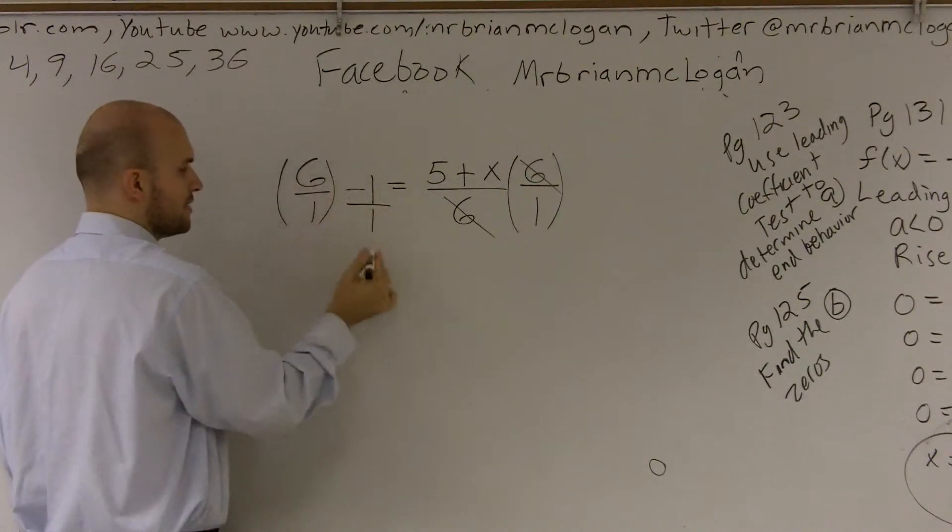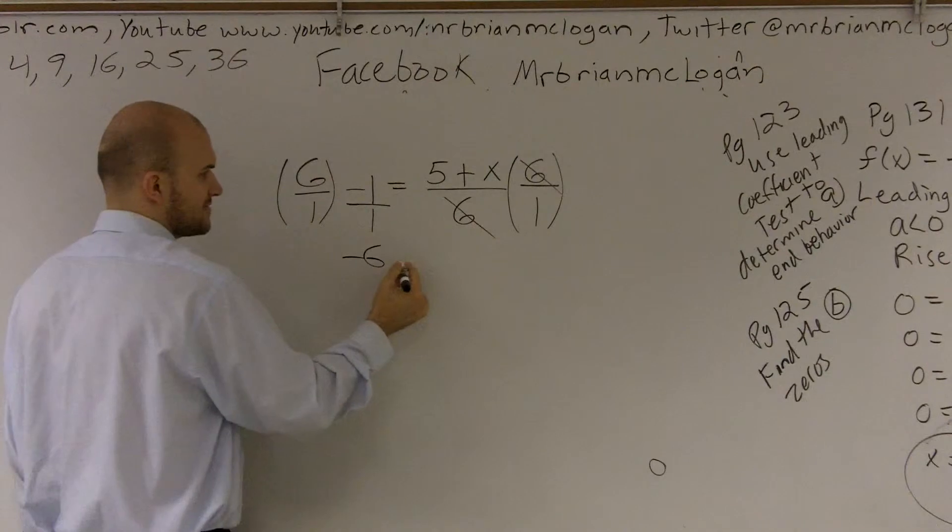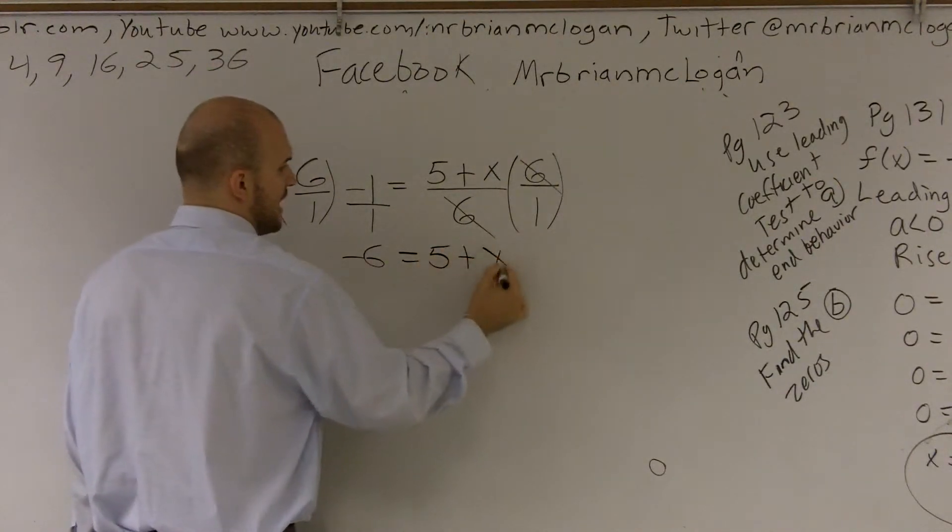6 times negative 1 is negative 6. Over 1, we just write as negative 6, equals 5 plus x.